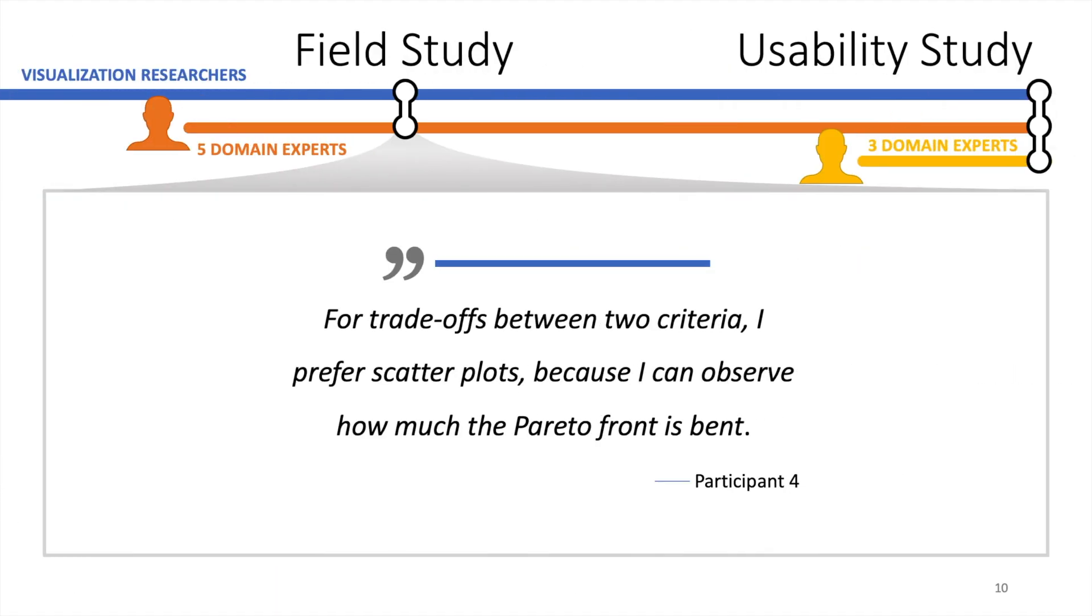To validate our visualization design in the wild, we deployed the tool to motor engineers and observed how they interacted with it in their own working environment. One participant pointed out that whenever only two criteria need to be balanced, scatterplots are his visualization of choice, because the bending of the Pareto front directly conveys how much losses in one criterion need to be traded for a certain gain in the other criterion.